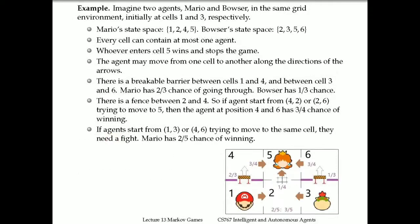Let's look at a simple example. We have a typical grid world scenario with a two-by-three grid. There are six states, one through six, where we have two agents—Mario and Bowser—who start from their respective locations, namely one and three. They would like to end up at position five where the princess is locked up. Whoever gets there first wins the game.